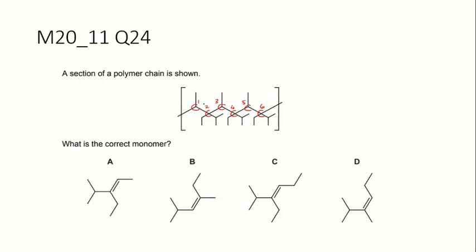So every alkene contains double bond, so the double bond is between two carbon atoms. So when they join and form an addition polymer, the pi bond is broken.